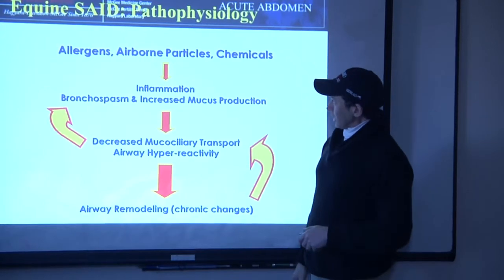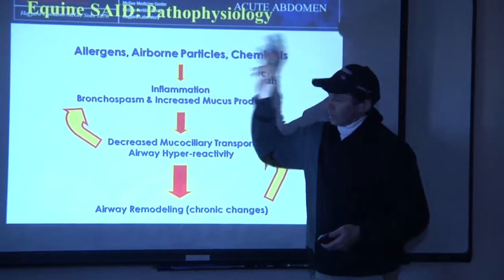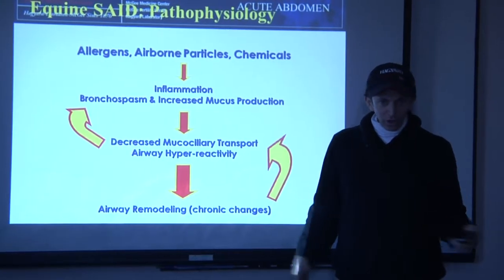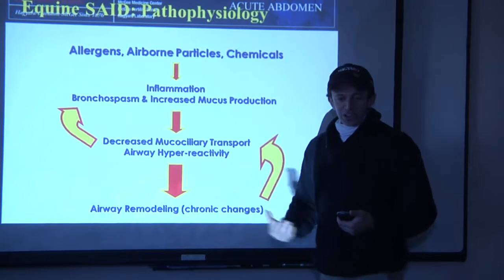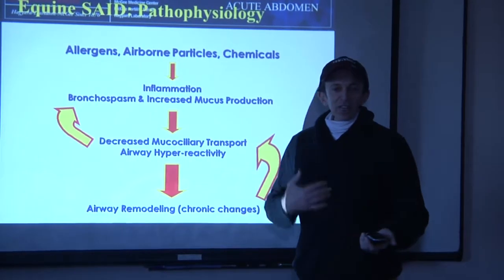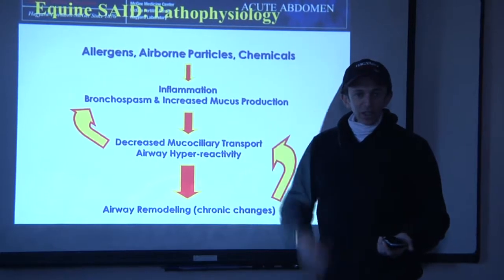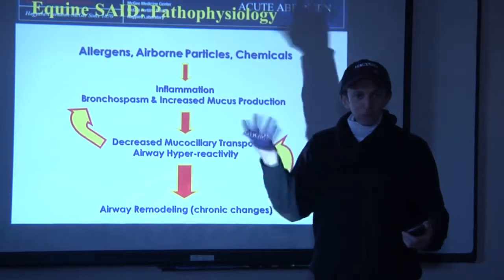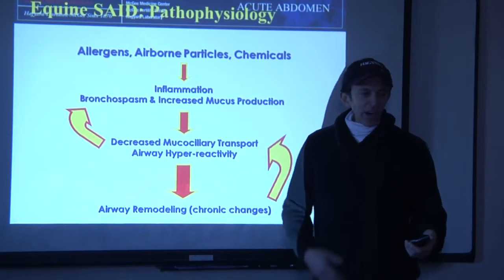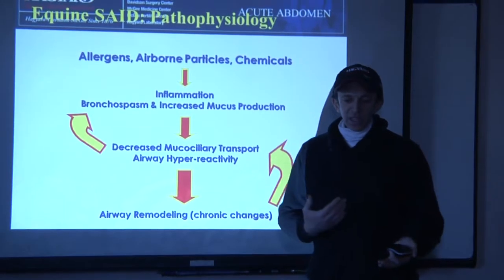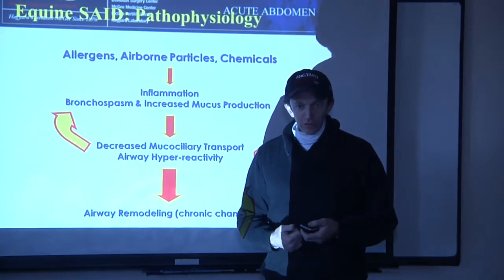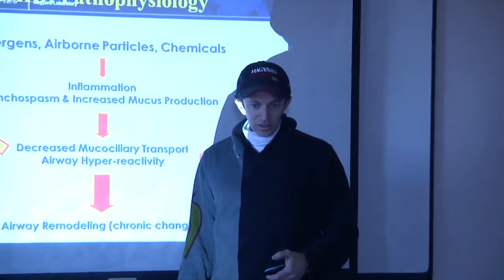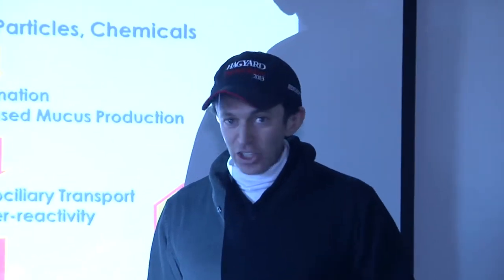The pathophysiology is pretty straightforward. Allergens, airborne particles, chemicals — ammonia from urine, for example — excess ammonia can wipe out the mucociliary apparatus. This leads to inflammation, bronchospasms, and increased mucus production. Too much mucus means the mucociliary apparatus, those shag rug cells, can't work or move properly. Then you get airway hyperreactivity, produce more mucus, and airway remodeling. When you start getting chronic changes, you have an animal that's going to be a chronic poor doer — just like people who smoke cigarettes, chronic changes happen in the lungs that you can't reverse. If your horse is exposed to this for an excessive period of time, the same thing can happen.